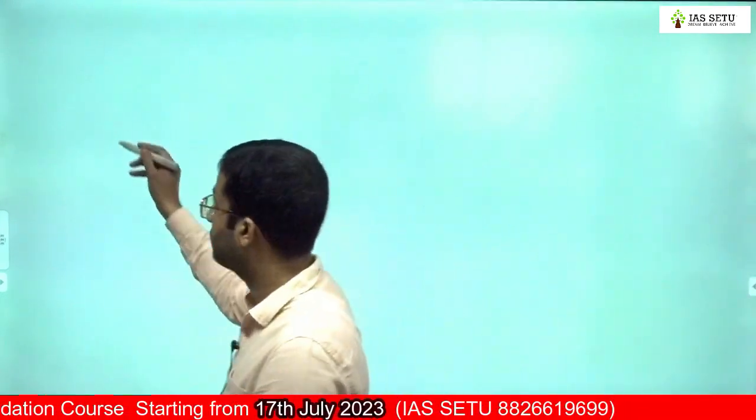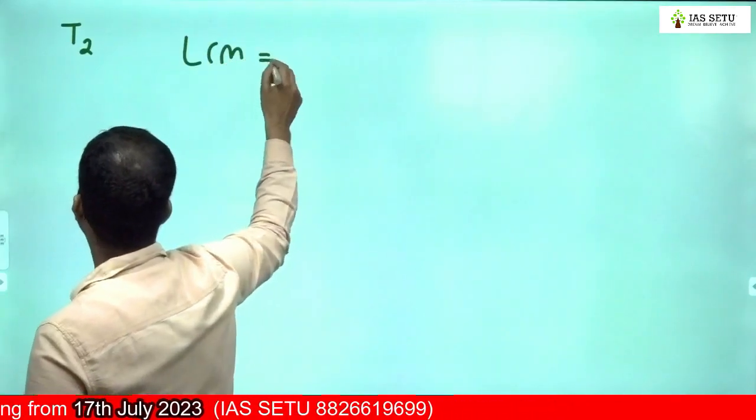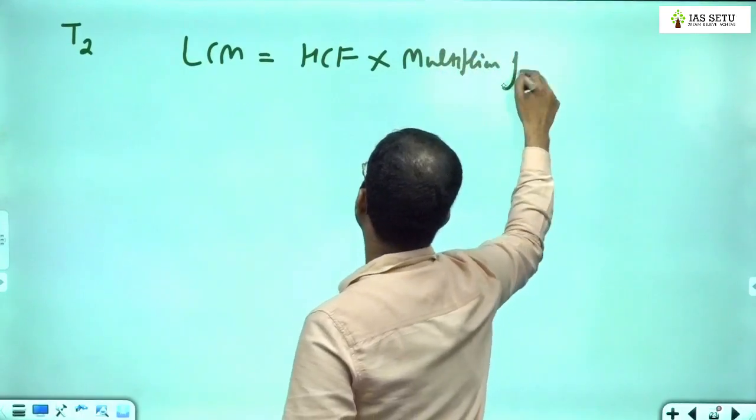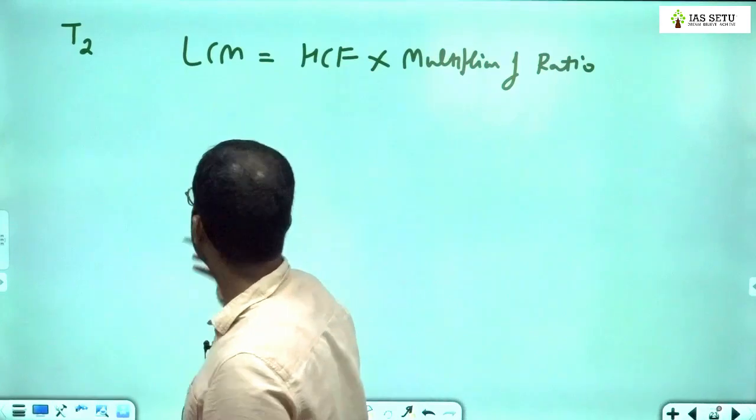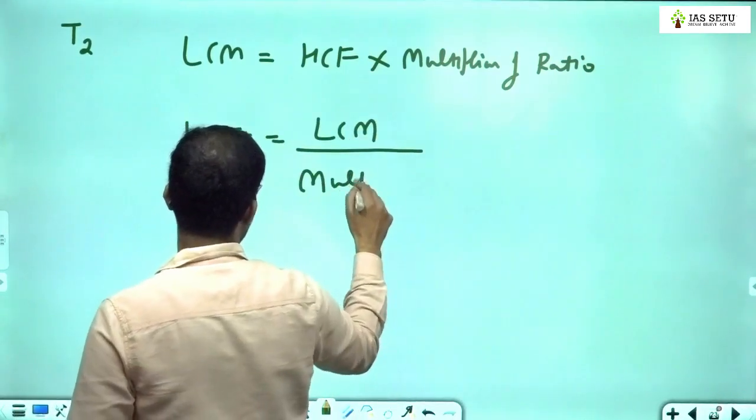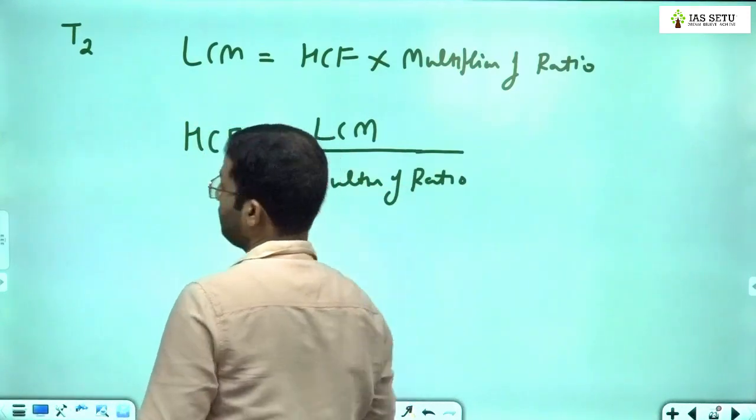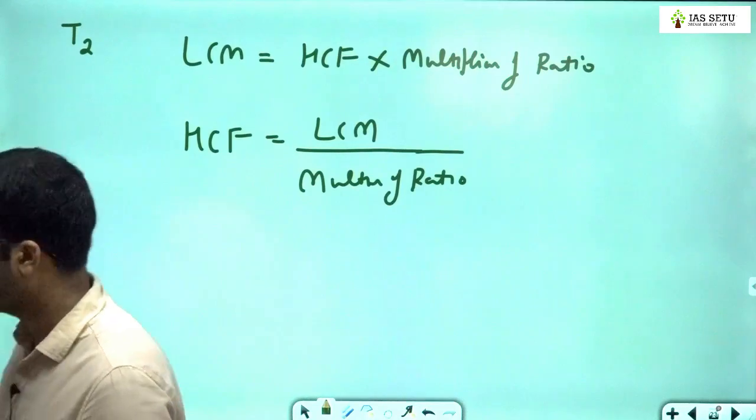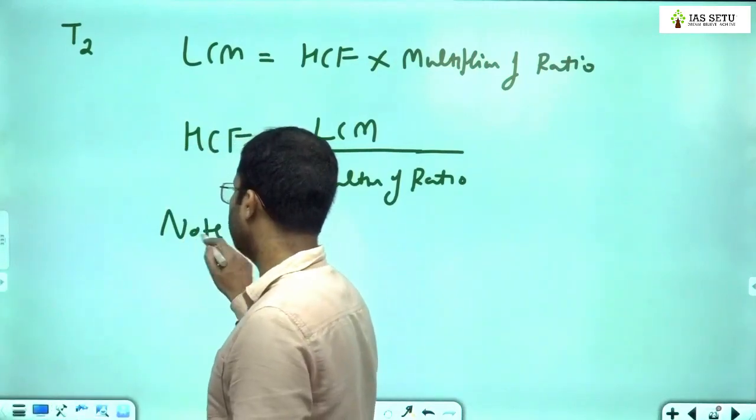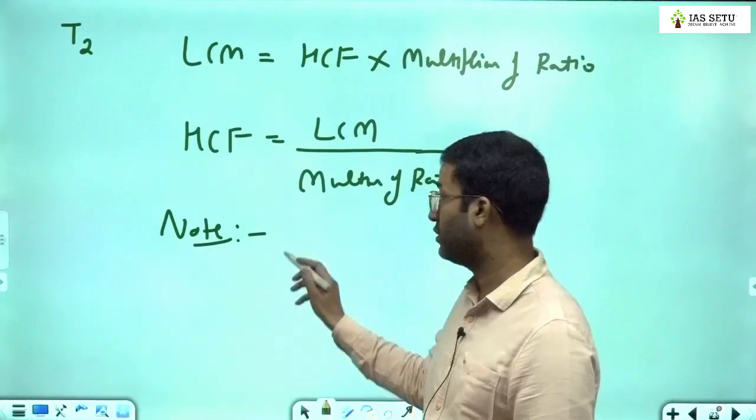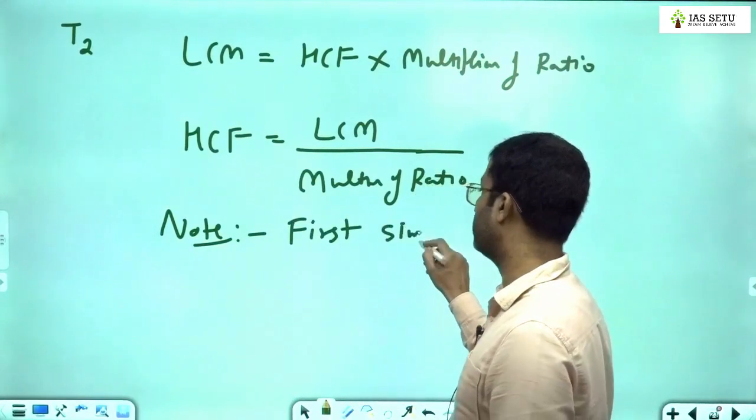So under miscellaneous category type 2, I tell you what you have to do: LCM = HCF × multiplication of ratio, and HCF = LCM ÷ multiplication of ratio. This is favorite type where they give ratio of the numbers, they give either HCF or LCM, they ask the other part. Write a note: if ratios are not simplified, first simplify the ratio. This is important - if ratios are not simplified, then it will not work. First simplify the ratio.